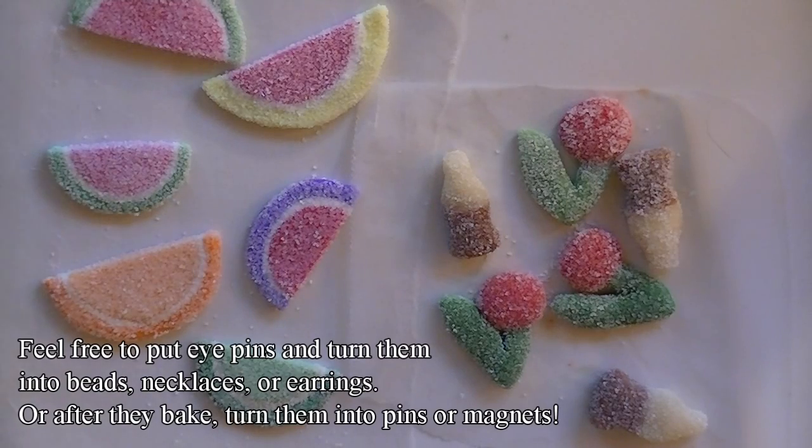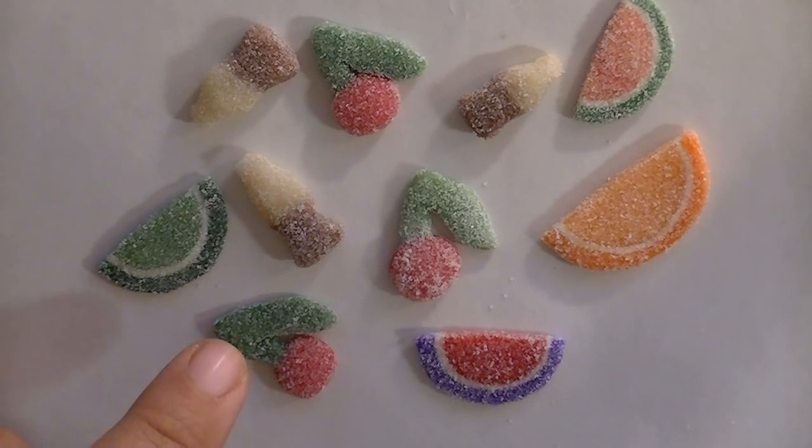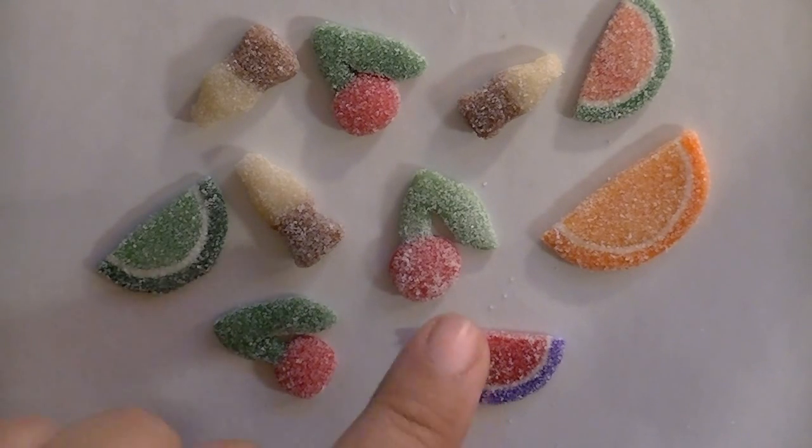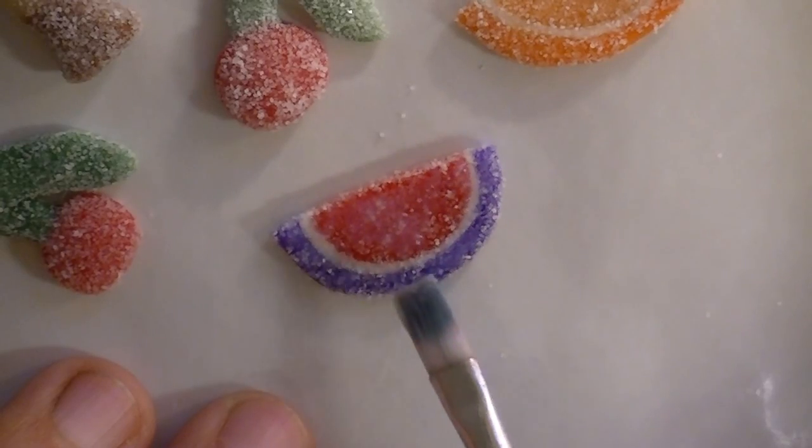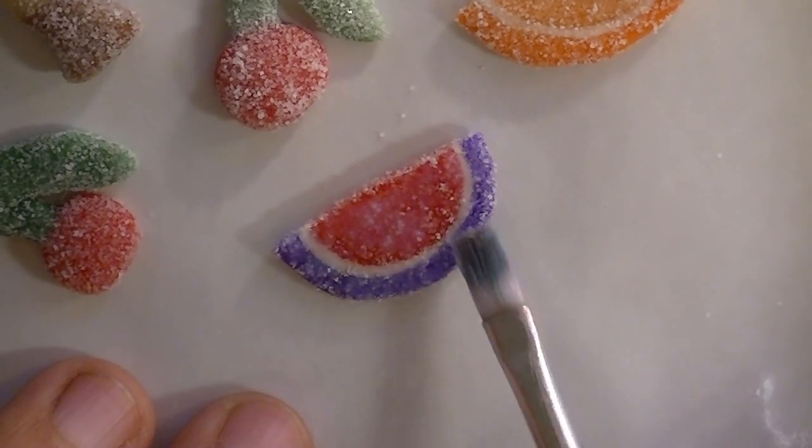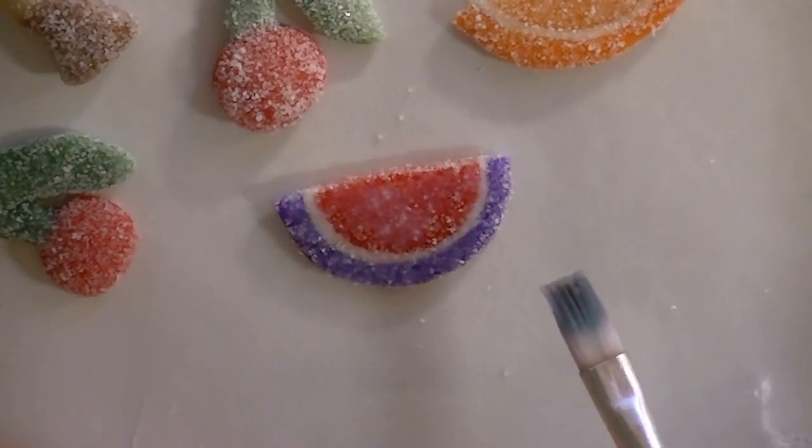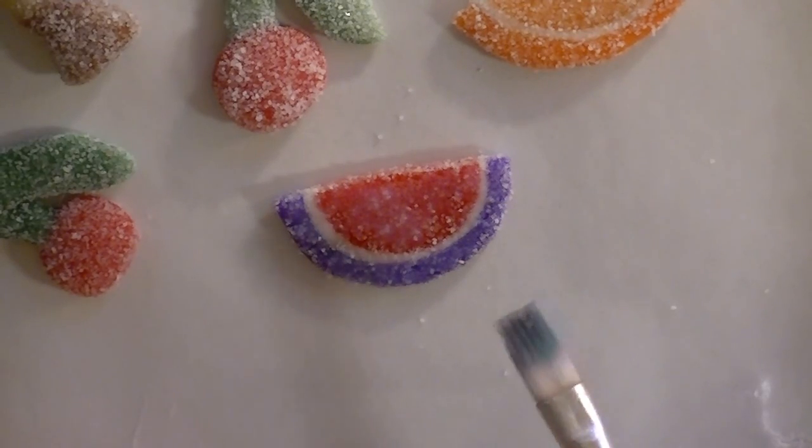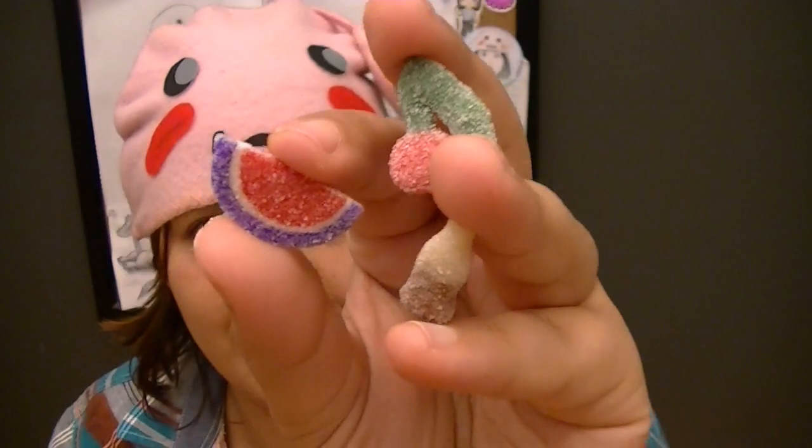Once you have all your gummies, bake them for 8 minutes at 300 degrees Fahrenheit. Make sure that your oven was preheated. Once your pieces are baked, you're going to have to glaze them. That way you're keeping the sugar sealed on there. When you're glazing it, don't rub the brush against it. Just dab it right on top. Once you glaze everything, let it completely dry before using it. All done!